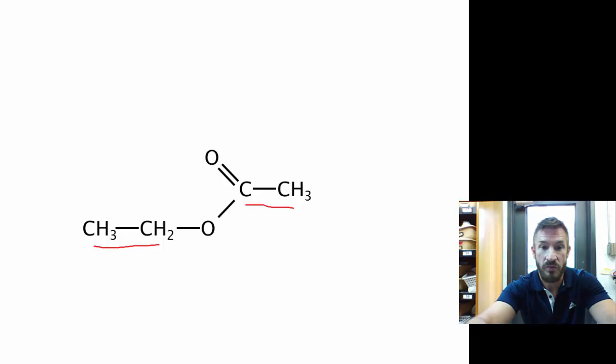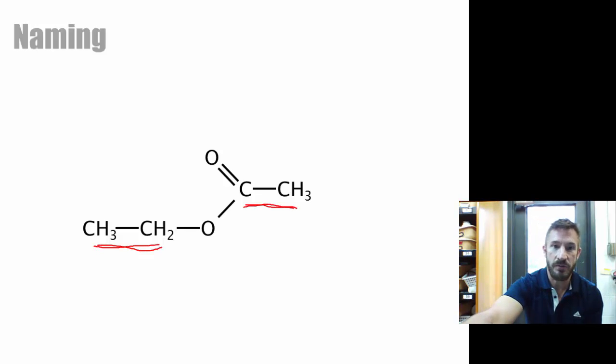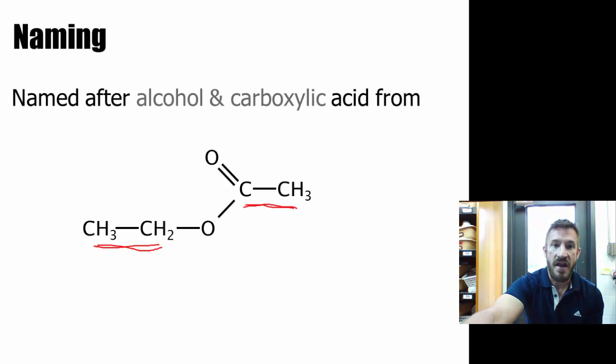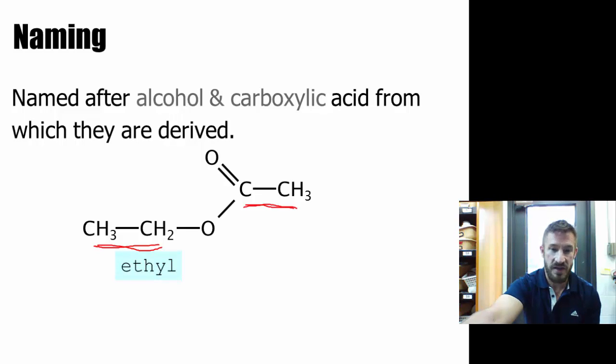How would you name this? You name this part first. That would be ethyl. And then we have ethanoate. So, naming is based on the alcohol and the carboxylic acid from which it came. We say the ethyl first, and then we say ethanoate. Our naming and our few organic reactions we're going to look at.